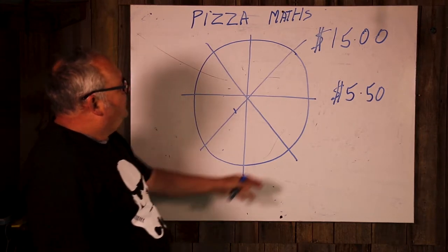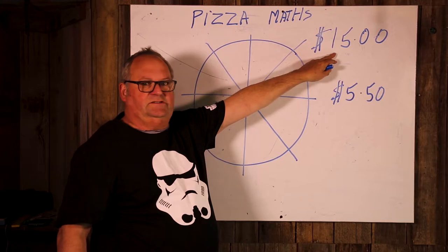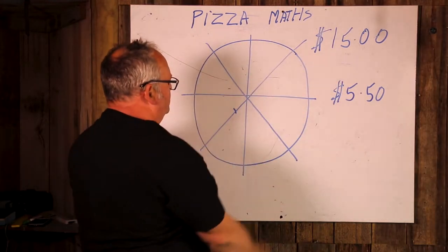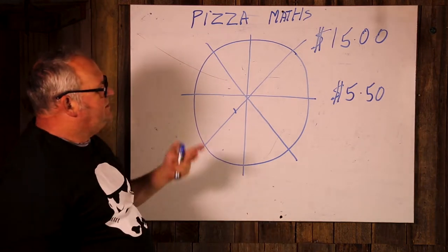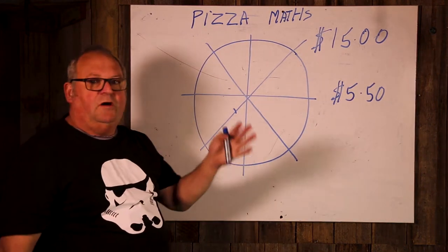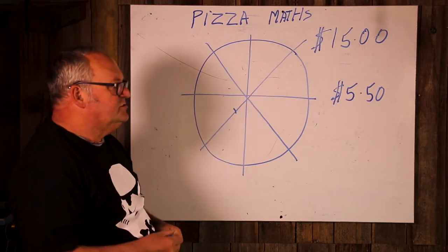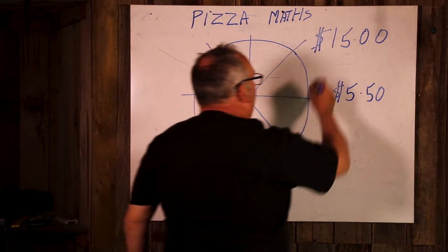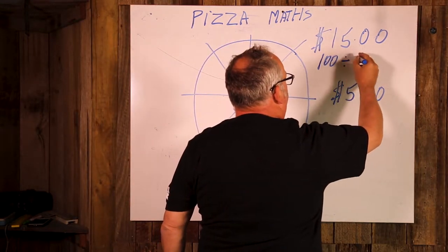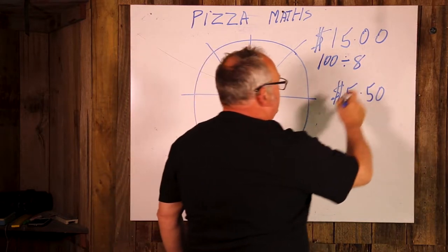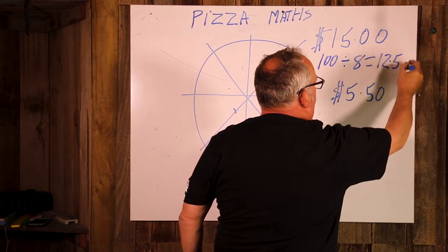So we buy a pizza and we spend $15 and that is 100% of the pizza, all of it. What we need to do is work out what the percentage of each slice of pizza is. So, 100 divided by 8, because there's 8 slices, equals 12.5%.